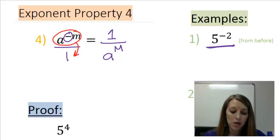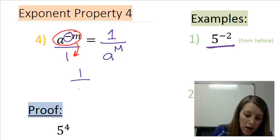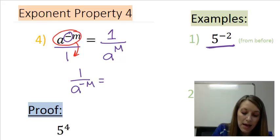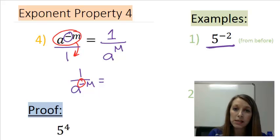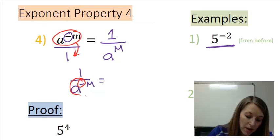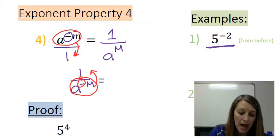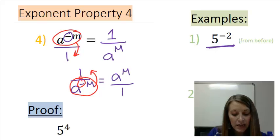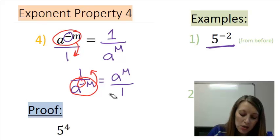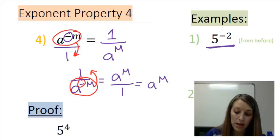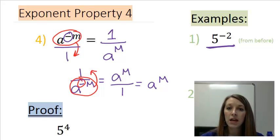We have a different version of this, but it fits in with the same property. If I have 1 over a to the negative m, that means I have a bad attitude in the basement of my house. If he's in the bad attitude in the basement, then I move him upstairs to get rid of his bad attitude. That gives me a to the positive m upstairs. Technically that is over 1, but we never leave it like that because over 1 simplifies, so the best version of this is a to the m. The way to get rid of negative exponents or bad attitudes is to move them to the other floor, meaning the other side of the fraction.